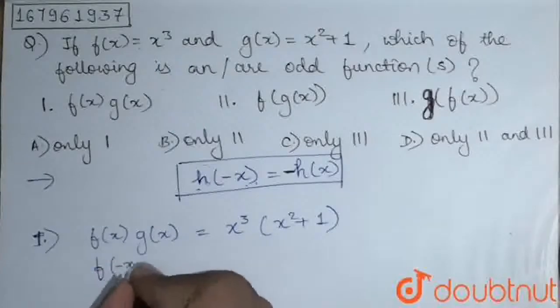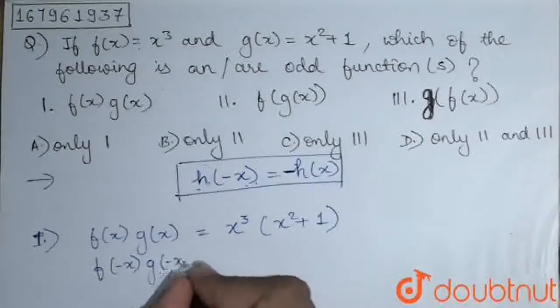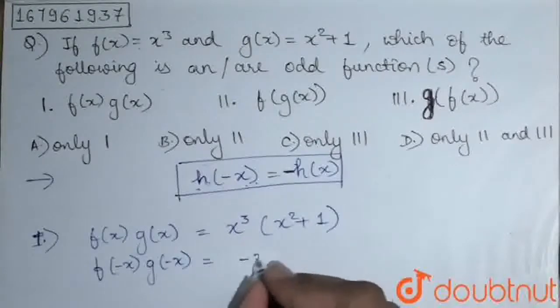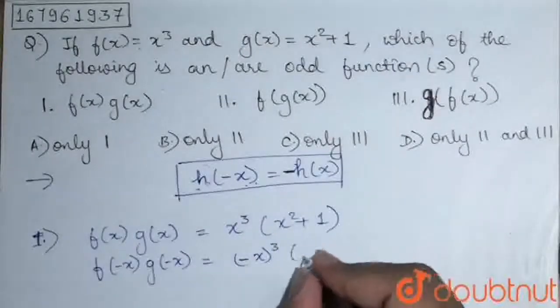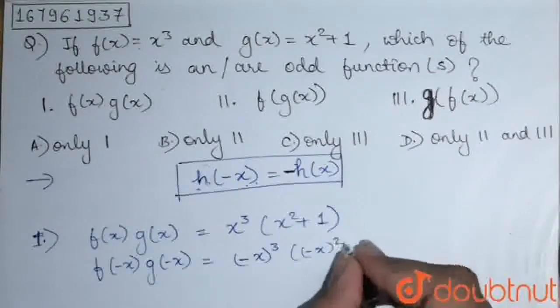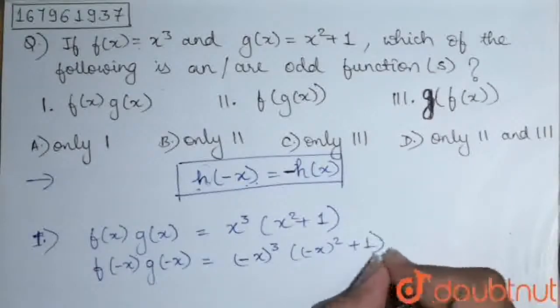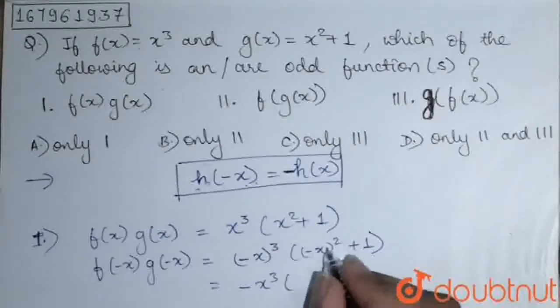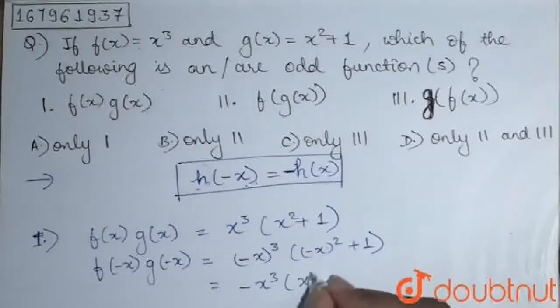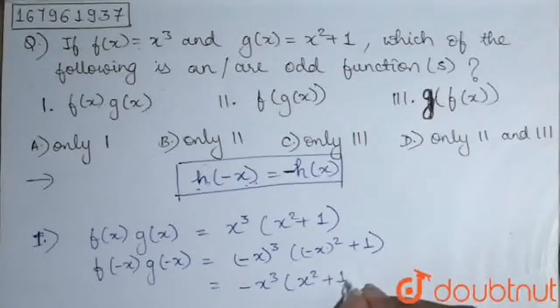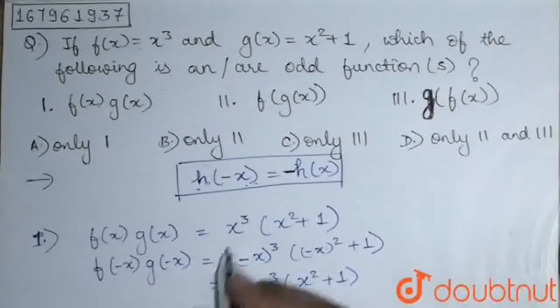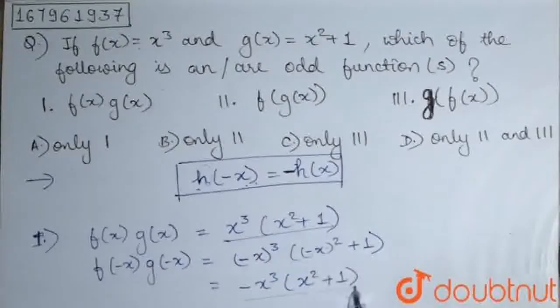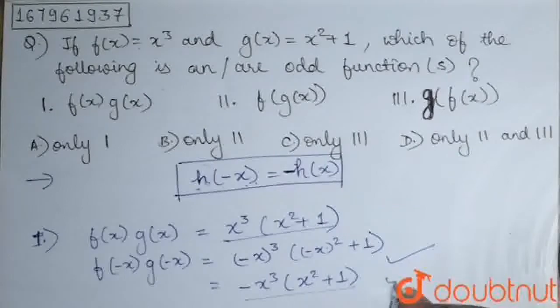And f(-x) into g(-x) will be, we have to put simply -x in place of x. So it will be (-x)³ into (-x)² + 1. So it would be -x³ and -x squared will be x² only plus 1. Yes, it is satisfying the property because this function is negative of this. So yes, it is odd.